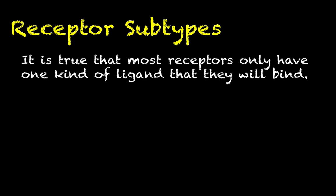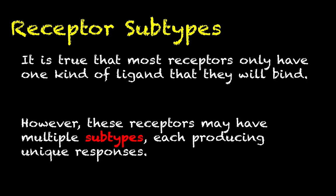It is true that most receptors are only going to have one kind of ligand that they will bind to, but what we're going to see — especially when we start interrogating the nervous system — is that these receptors may come in several different varieties, or subtypes. Receptors that have different subtypes are all the same kind of receptor; it's just that they're slightly different compared to one another, and importantly each subtype may produce unique responses.